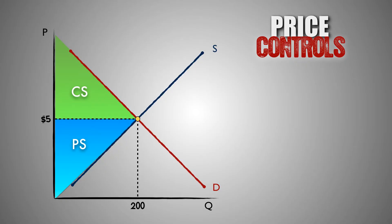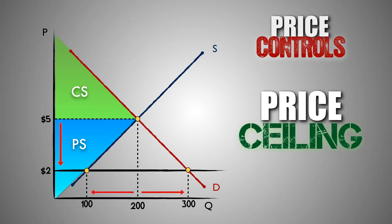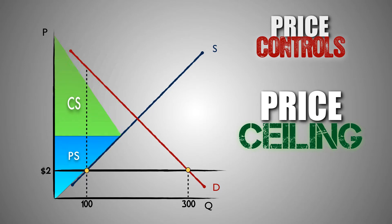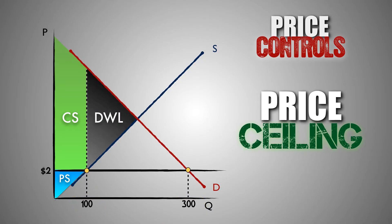Let's begin with price controls. Suppose that supply and demand in the market for Good B has established an equilibrium price of $5 and an equilibrium output of 200 units. To make Good B more affordable for consumers, the government enacts a price ceiling at a price of $2 per unit, causing the quantity demanded to increase and the quantity supplied to decrease, resulting in a shortage in the market for Good B. When price decreases to the new legal maximum of $2, consumer surplus will increase and producer surplus will decrease, as the product price is closer to the seller's minimum price and further away from the buyer's maximum price.